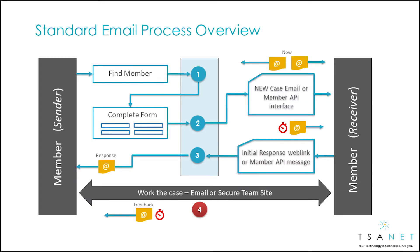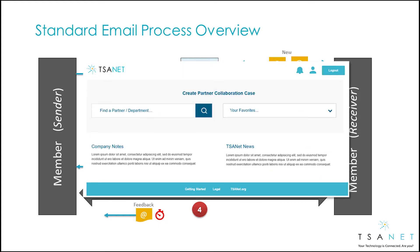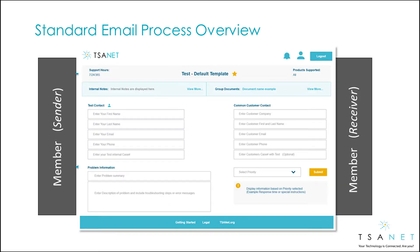Let's take a look at the end-to-end process to better understand how TSAnet Connect works. First, the sender logs into TSAnet Connect and finds a partner. They fill out their process form, select a priority, and hit Submit.